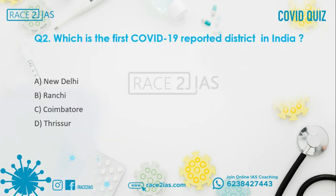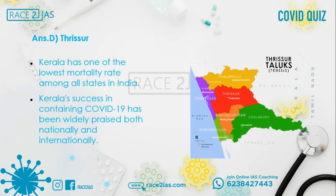Question number 2: Which is the first COVID-19 reported district in India? Option A: New Delhi. Option B: Karanji. Option C: Kayambatur. Option D: Thrissur. The answer is Thrissur, Kerala. Kerala has one of the lowest mortality rates among all states in India, and Kerala's success in containing COVID-19 has been widely praised both nationally and internationally.